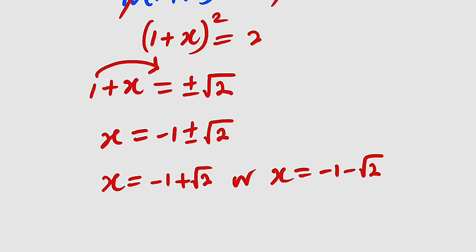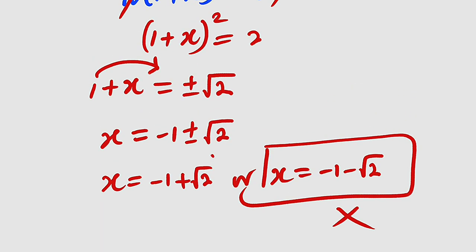But what do you know about x? x is a length. Therefore, a length cannot be negative. Therefore, we are going to discard this solution. We don't want it. But this is positive indeed. So it means the value of that x is equal to negative 1 plus root 2.